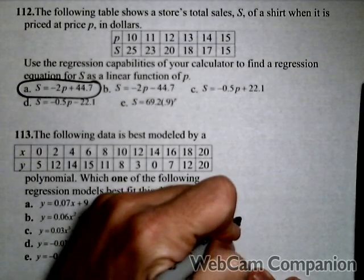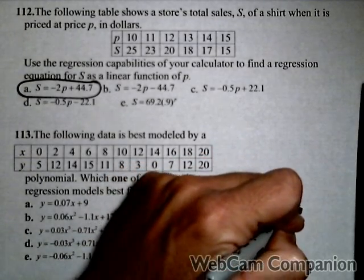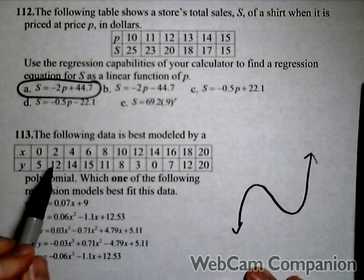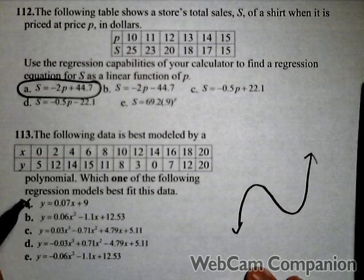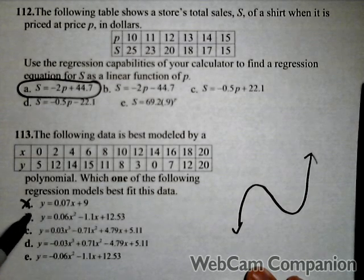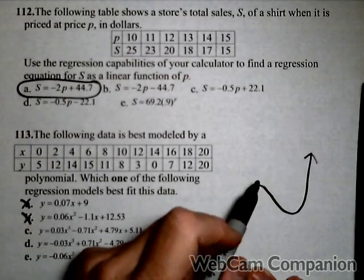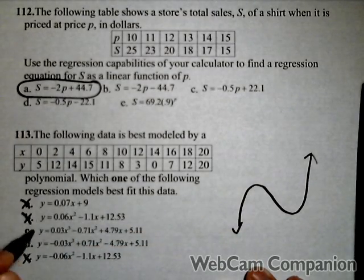So the data increases, then decreases, then increases again. We're not going to want to use a linear model because it's got no concavity. A quadratic's not going to be good enough because it would only change directions once. We need something to change directions twice.